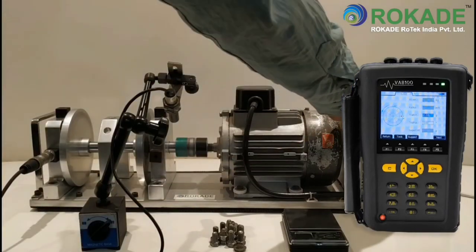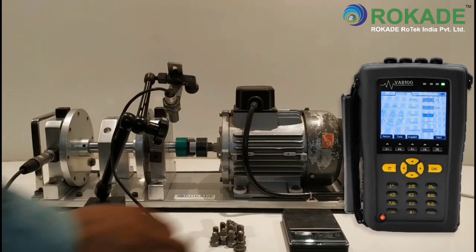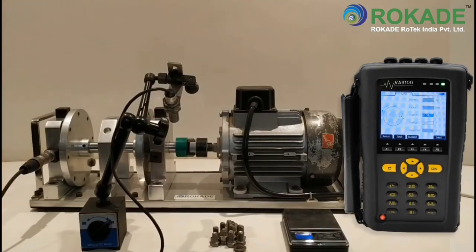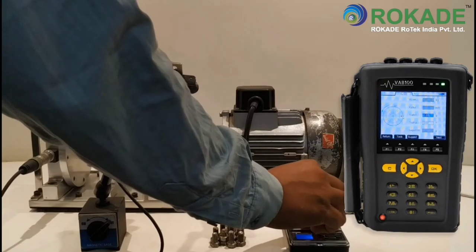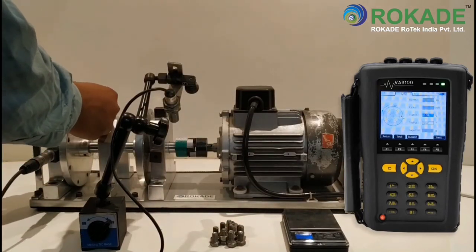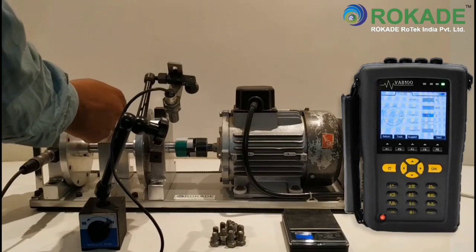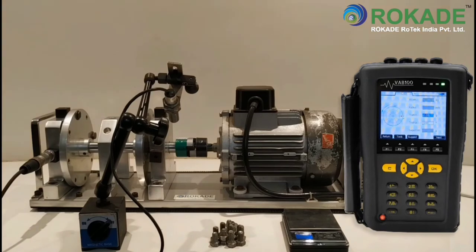Stop the machine. Now add a trial weight. Enter the trial weight in grams, and consider the trail weight angle as zero degree. After that click on next.